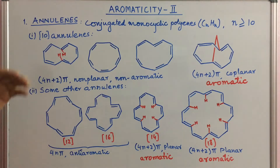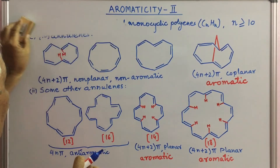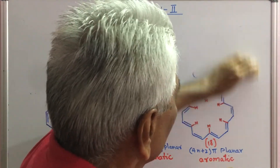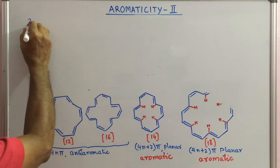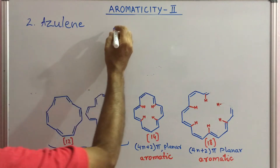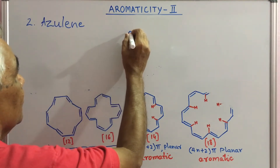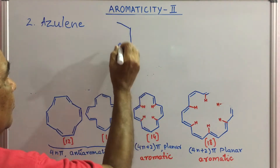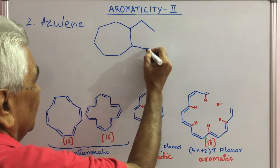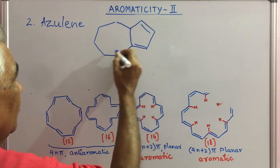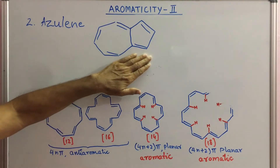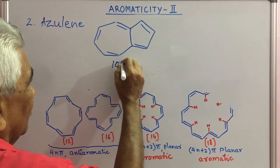Next we see other systems in which aromaticity is observed. Number two is azulene. This molecule has 10 pi electrons and is a planar molecule, and therefore it is aromatic.